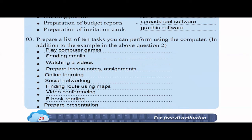Online learning is one example — that's what you are doing now, watching a YouTube video and learning. Social networking can be done with different applications like Facebook, Twitter, and TikTok. You can also find routes using maps. In earlier days we didn't have Google Maps, so we had to ask people who would give different, sometimes confusing directions. Nowadays, with maps, it's very easy to go anywhere.